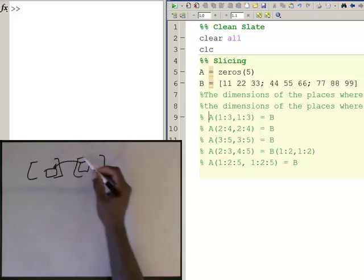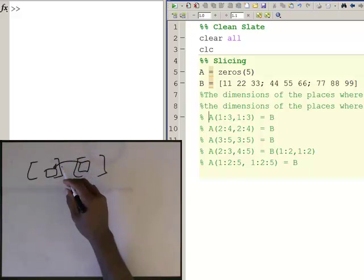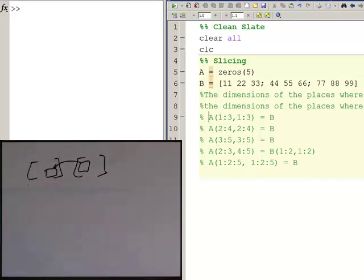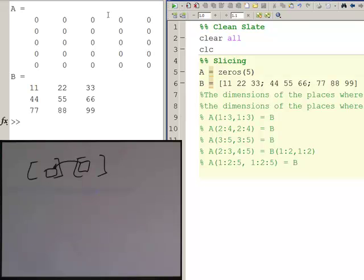If you keep that in mind you should be okay. Over in MATLAB I'm going to define two arrays: one A, which is just a five by five array of zeros, and one B, which is a three by three array of numbers. What I'm going to do as illustration here is place either all or parts of this array B into array A.